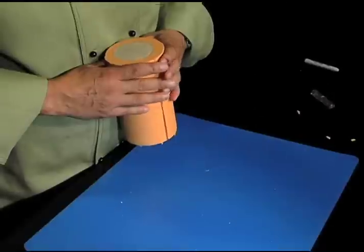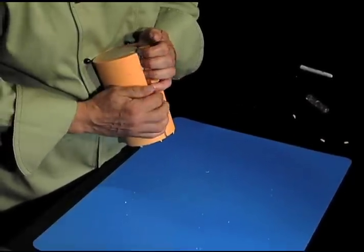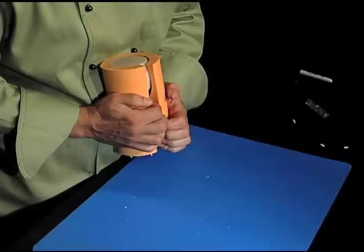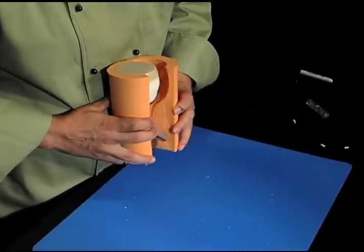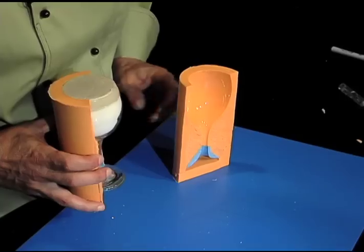Once all sides of the mold have been properly cut, separate the mold from the wine glass to expose each side of the newly made wine glass mold.